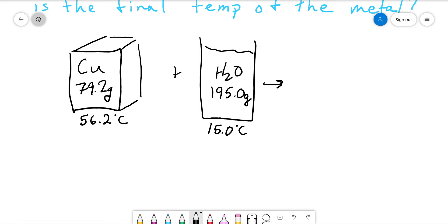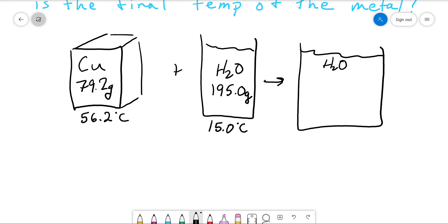And then we have a beaker of water, 195.0 grams, and it is at 15.0 degrees Celsius. Now, we combine the two. We still have the water and we have the piece of copper that is now shrunk to fit. What's going to happen is heat will flow out of the copper and into the water.